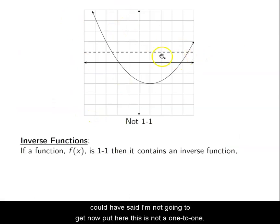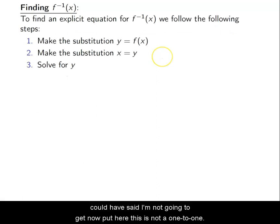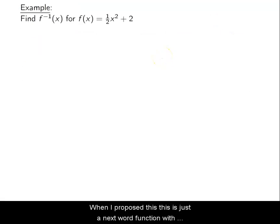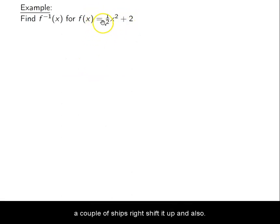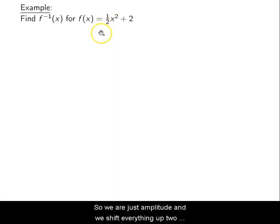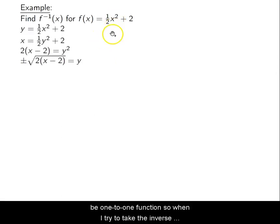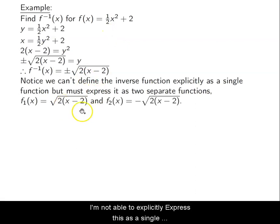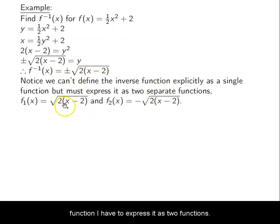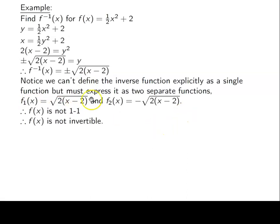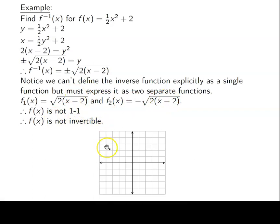This is a quadratic — a parabola — and we said from the very first example that x² is not one-to-one. This function is just an x² with a shift up and a change in amplitude; it's still a parabola. So we could have anticipated this: it's not one-to-one, so when I try to take the inverse, I can't express it as a single function — it's not invertible.